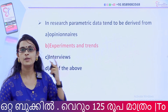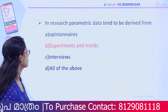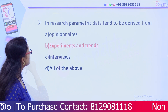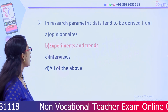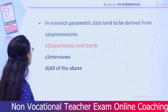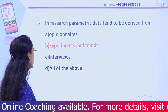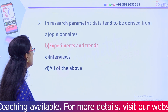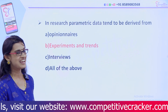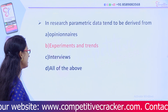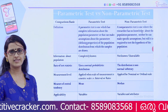Next question: In research, parametric data tend to be derived from — Option A, questionnaires; Option B, experiments and trends; Option C, interviews; Option D, all of the above. The right answer is Option B, experiments and trends.